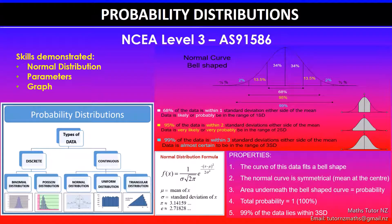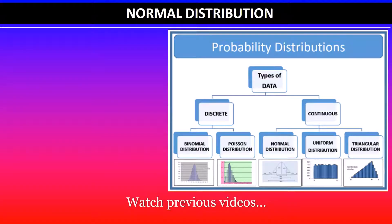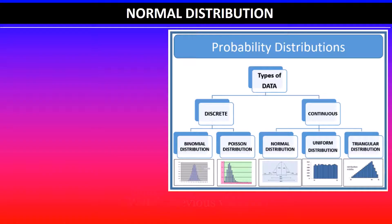Greetings everyone. In this video we will be looking at NCEA Level 3 probability distributions achievement standard, focusing on normal distribution — its properties and the graph that models this distribution. You will need to be familiar with two types of data: discrete and continuous. In my previous videos I've covered discrete probability distributions — binomial and Poisson — so please check those out. Over the next few videos I'll be focusing on continuous probability distributions, starting with normal distribution.